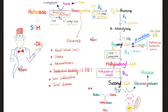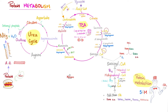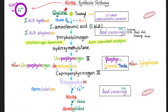Then heme will join with globin to give me hemoglobin. Then hemoglobin will join the party in the red blood cell — all of this happens in the bone marrow. Hemoglobin carries oxygen to the tissue and carries carbon dioxide from the tissue and to the lungs. Look at the beautiful succinyl-CoA: it can enter the TCA cycle to give me energy, it can give me glucose through gluconeogenesis, or it can give me heme.